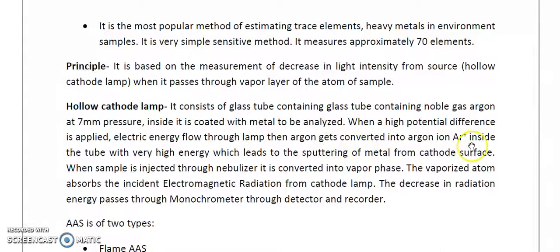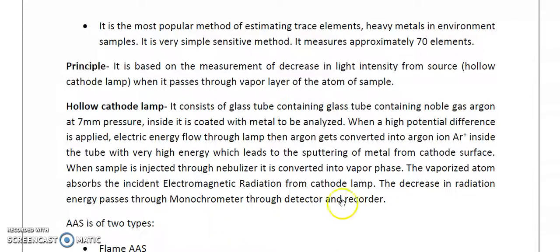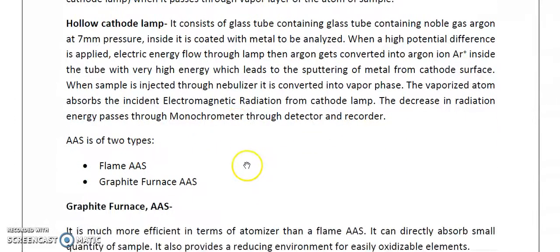The high-energy argon ions cause sputtering of metals from the cathode surface. When the sample is injected through the nebulizer it is converted into the vapor phase. The vaporized atoms absorb the electromagnetic radiation coming from the holocathode lamp — which emits radiation of the same element being analyzed. The decrease in radiation energy passes through the monochromator, detector, and recorder.